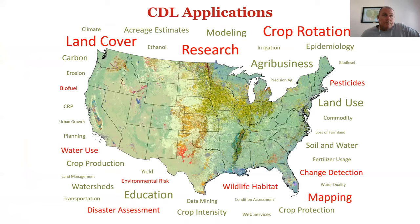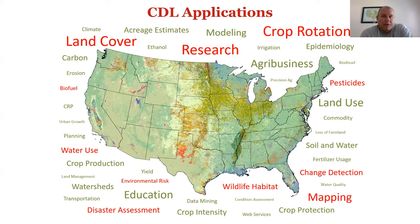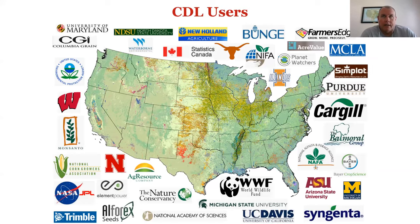These are some of the reported applications that people have come to us about for the cropland data layer. We've made the text larger based on reported frequency of use, so smaller text items like loss of farmland or precision ag are used and reported less. This gives you an idea of what the CDL applications are being used for, and here are some of the users — a wide variety across the country. They don't necessarily explain to us what they're using it for, but they will complain to us about what's wrong with our product and ask us to enhance it.